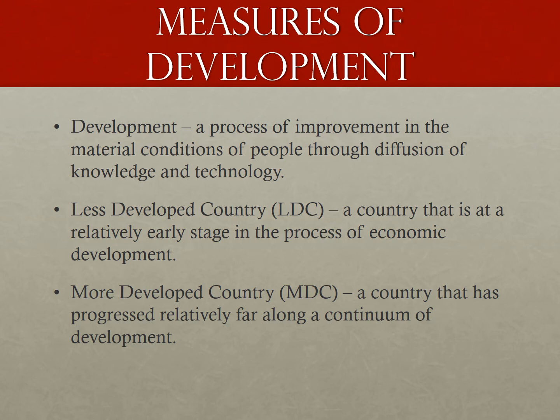Hello Human Geographers, we are back at it again this evening. Tonight we're going to look at how we measure development. So let's start with what is development? Development is a process of improvement in the material conditions of people through the diffusion of knowledge and technology — improvement or advancement that countries undergo, which really took off during and immediately after the Industrial Revolution. Development can be measured through both economic advances like creating new jobs and improving incomes, as well as through social changes like improving health and education.